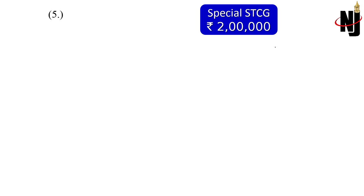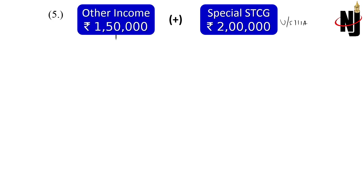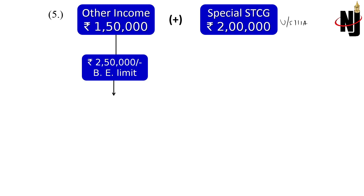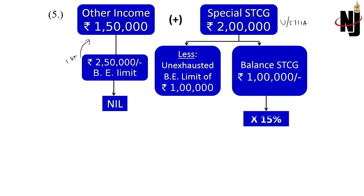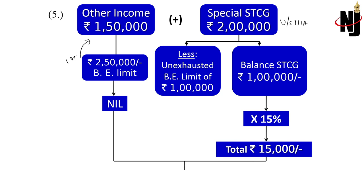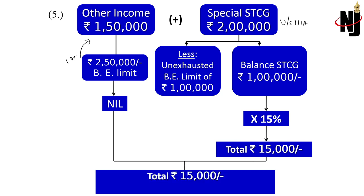Example: special STCG under section 111A is 2 lakh rupees (taxable at 15%), and other income is 1.5 lakh. Basic exemption is 2.5 lakh. Tax on other income: nil. Unexhausted basic exemption of 1 lakh is adjusted against special STCG, so only balance 1 lakh STCG is taxable at 15% — tax is 15,000. NTI is 1,50,000 plus 2,00,000 = 3,50,000, within 5 lakh range. Rebate under 87A is available; the assessee pays balance tax of 2,500.